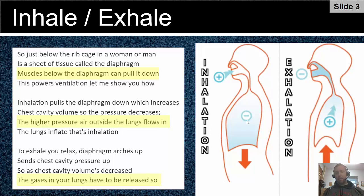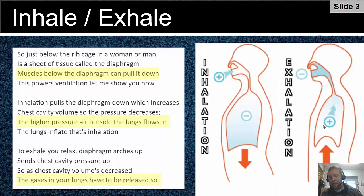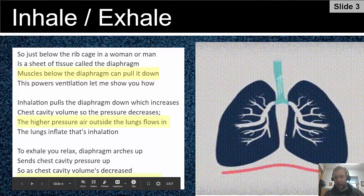Every time you breathe in, your lung gets bigger, meaning there's more space for air. The air on the outside comes into your lungs because there's more space. When you breathe out, your diaphragm is pushing up, and you notice there's much less space — the air feels cramped, there's a lot of air pressure, and the air wants to leave because there's more pressure inside than outside. That's why air leaves when the diaphragm goes up — it pushes your lungs smaller and out comes the air.